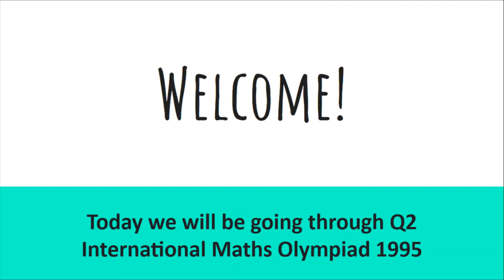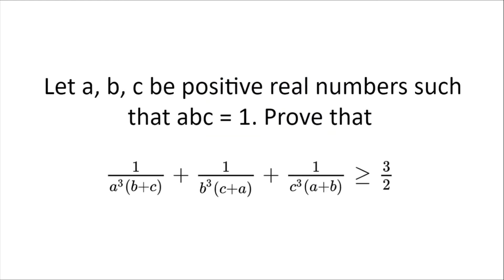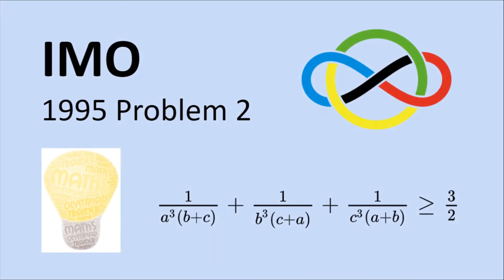Welcome. Today we will be going through question 2 from the International Maths Olympiad 1995. Let a, b, and c be positive real numbers such that abc is equal to 1. Prove that 1 divided by a cubed multiplied by (b plus c), plus 1 divided by b cubed multiplied by (c plus a), plus 1 divided by c cubed multiplied by (a plus b) is greater than or equal to three halves. Please pause the video here and have a think about the problem on your own before proceeding to the hints and solutions.